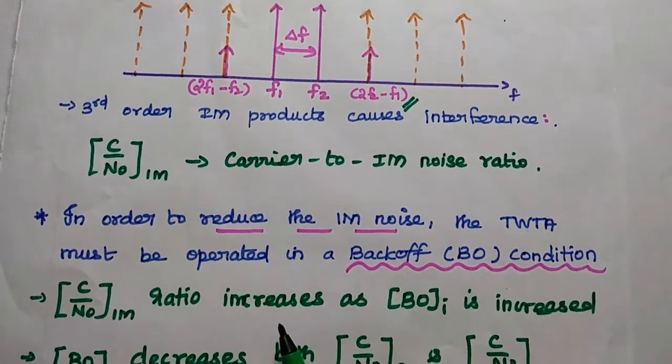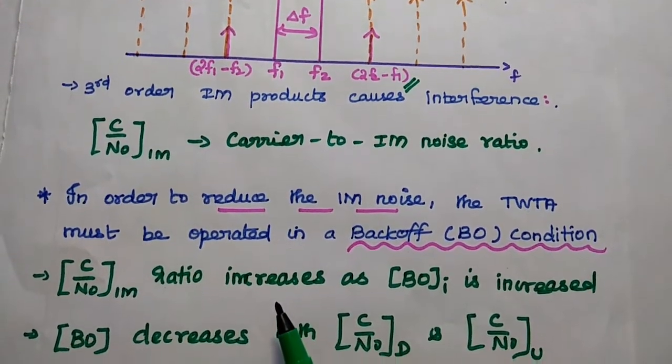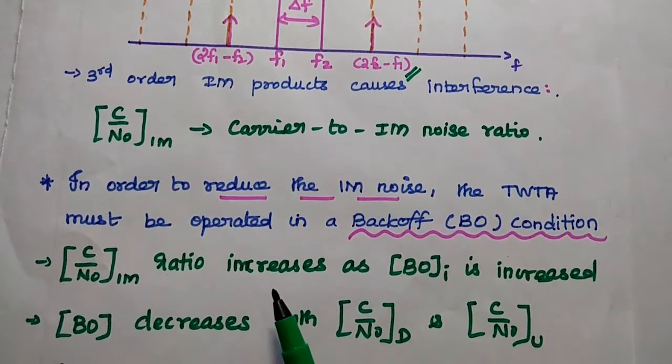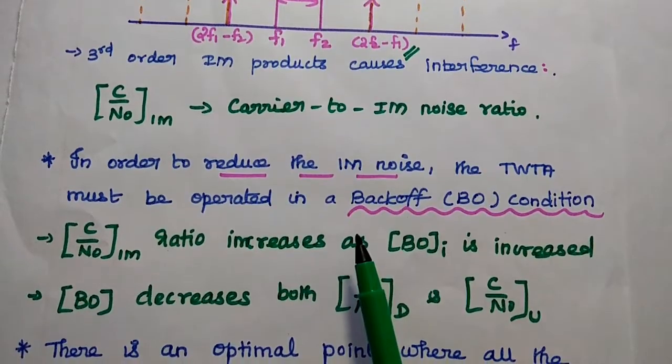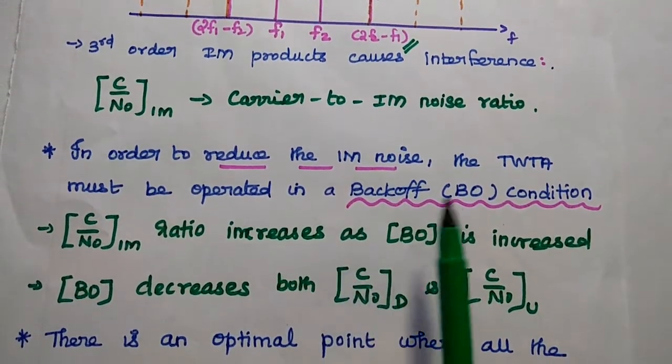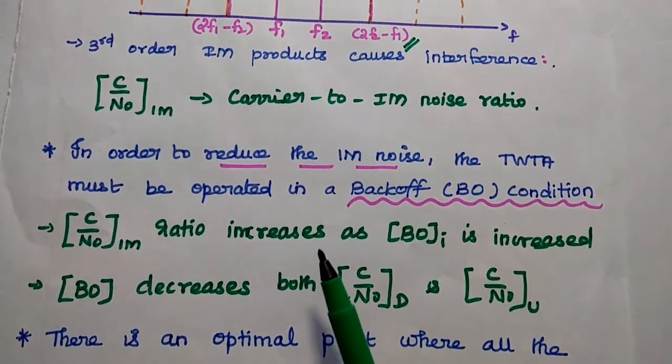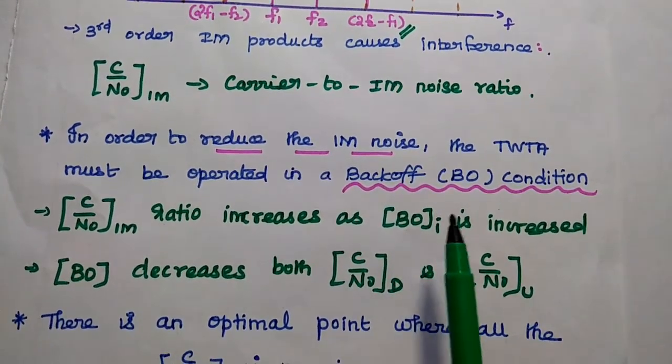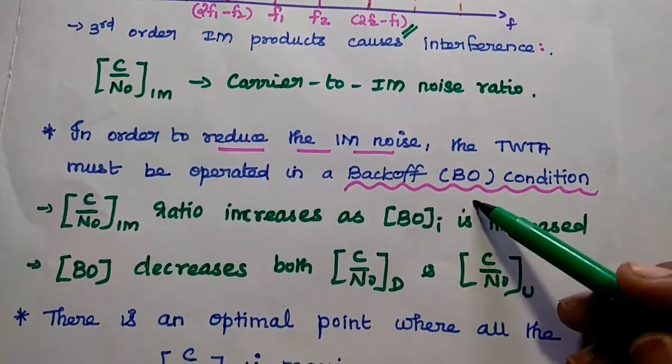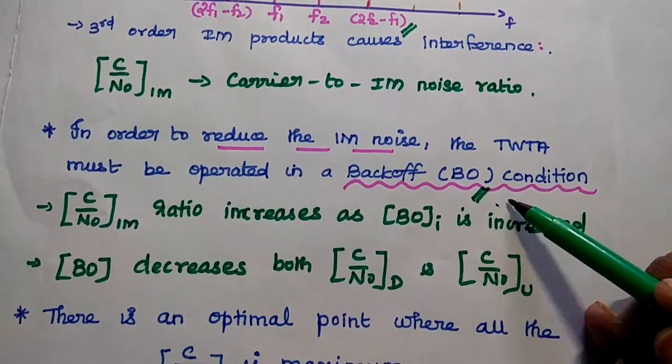This intermodulation noise is unwanted. We need to reduce this intermodulation noise in satellite communication. In order to reduce this intermodulation noise, the TWTA must be operated in the back-off condition at the input side as well as output side. Here we are concentrating on the input side.